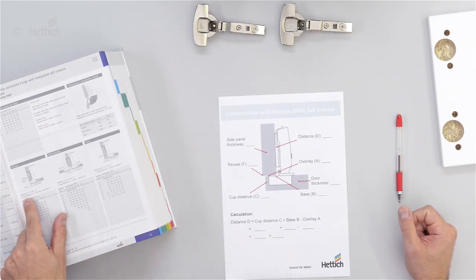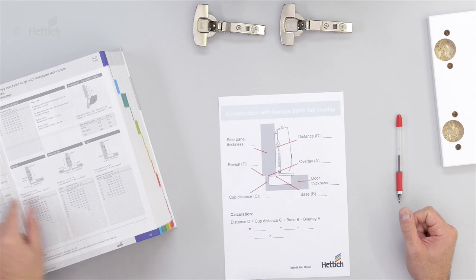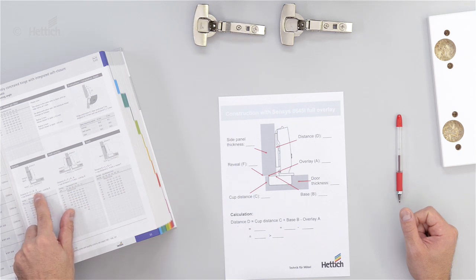The formula to calculate the mounting plate distance is here on the opposite side. Distance D equals C plus B minus A.